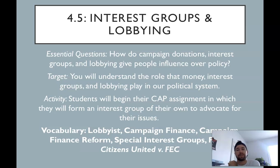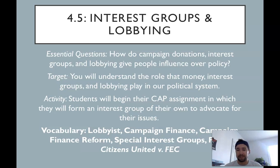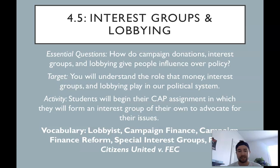We're thinking about today how campaign donations, interest groups, and lobbying give people influence over policy. Remember, policy are the things that government does — the decisions that government makes. Whenever a major decision is being made, people want to have some say in that. By the end of this, you'll understand the role that money, interest groups, and lobbying play in our political system. There's some vocabulary here that will come up as we go through the lesson.